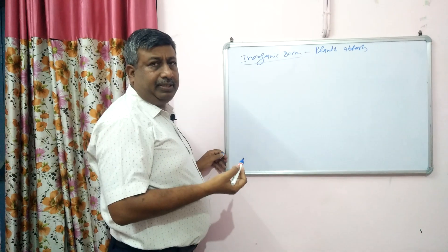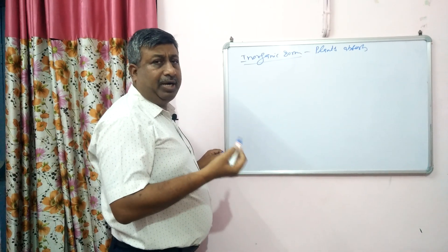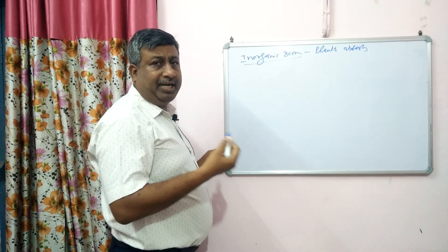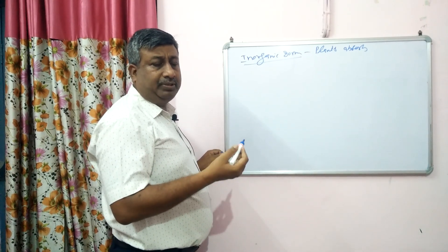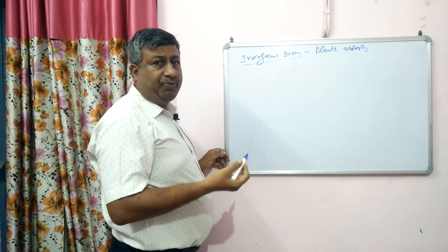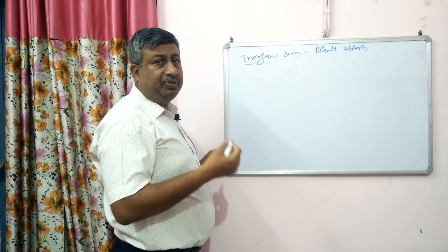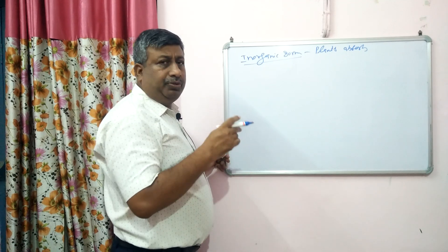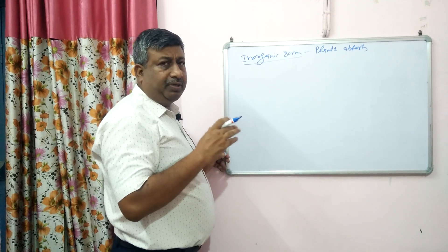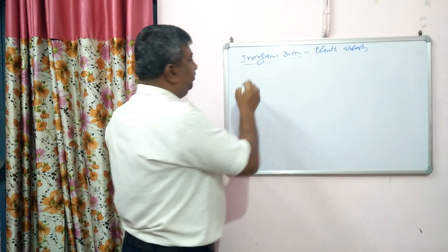For example, the inorganic form of nitrogen is ammonium or nitrate; for phosphorus it is orthophosphate; calcium as the calcium ion; sulphur as the sulphate ion. So different inorganic forms are there.